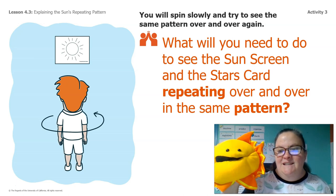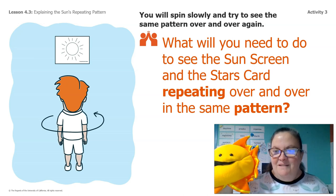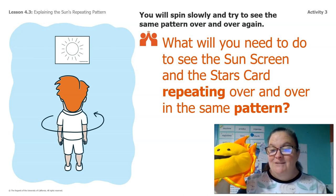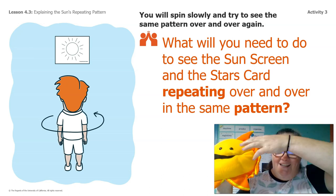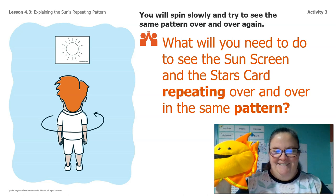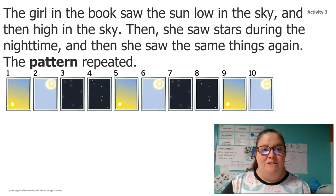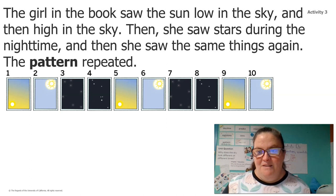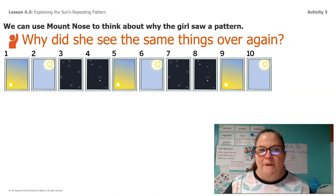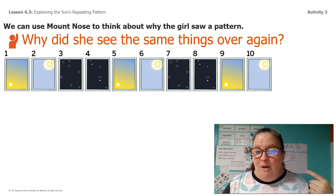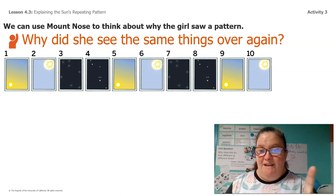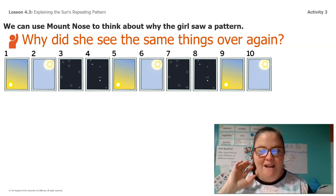You're going to spin slowly and try to see the same pattern over and over again. What will you need to do to see the sun screen and then the stars card repeating in the same pattern? When you're looking at the screen, that's looking at the sun. When you're turned directly behind you, you're looking at the stars. You're going to have to spin around and around. The girl in the book "What Spins" saw the sun low then high in the sky, then she saw stars at night, then she saw the same things again — the pattern repeated. What was happening with the Earth? The Earth was spinning.